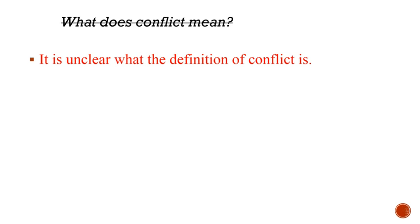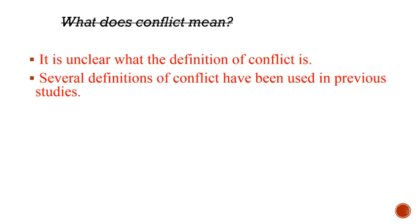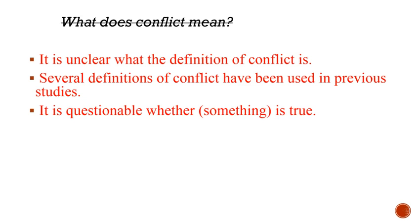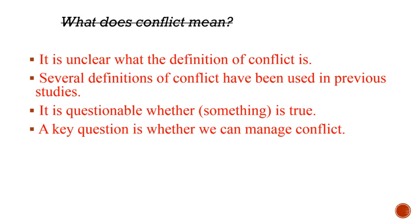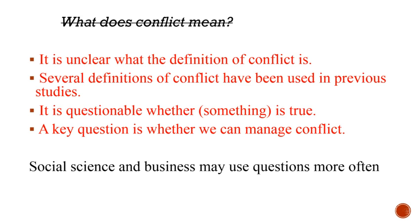Here are some phrases that are good transitions in academic writing: 'It's unclear what the definition of conflict is,' or 'Several definitions of conflict have been used in previous studies,' or 'It's questionable whether something is true,' or even 'A key question is whether we can manage conflict.' However, if you're in social science or business or writing more informally, you may use these question transitions more often.